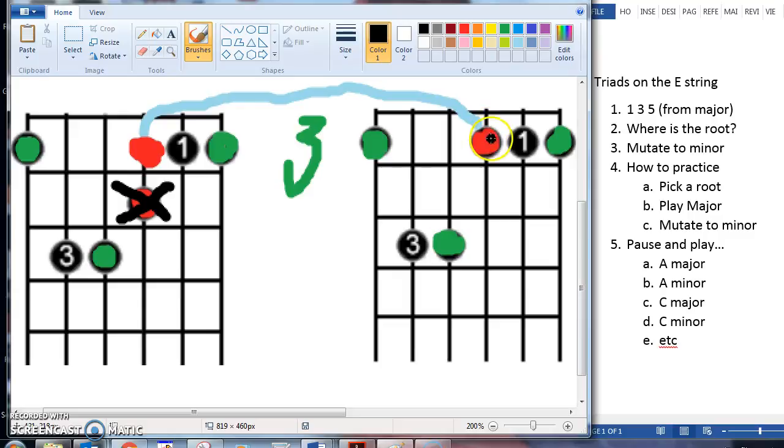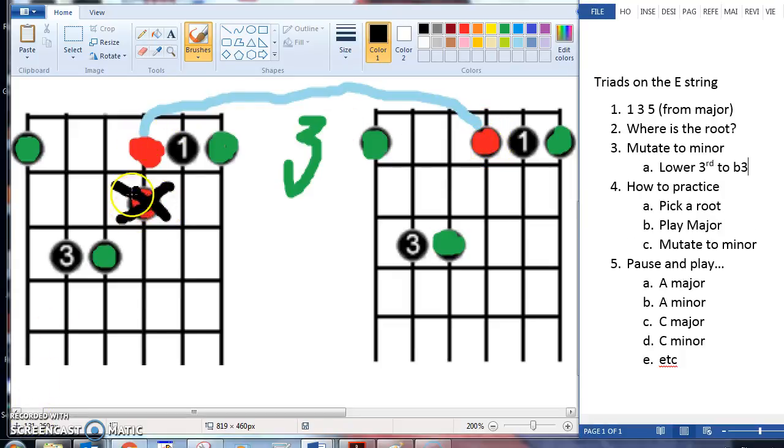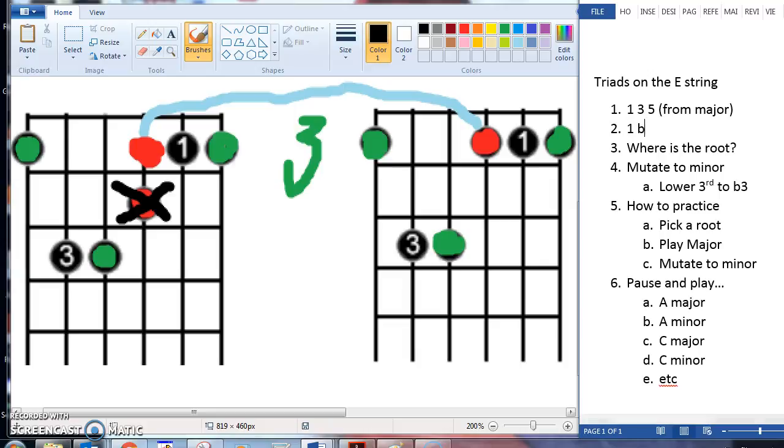So the blue line is connecting this note and this with the same pitch. So what you're doing when you lower this major third to a flat third, that's what makes it minor. So a major triad is 1 3 5. A minor triad is 1 flat 3 5. This is a minor triad.